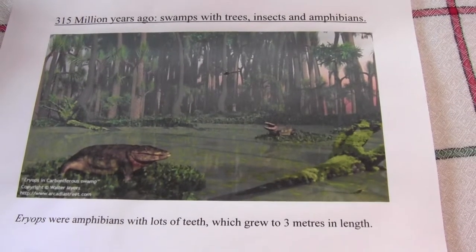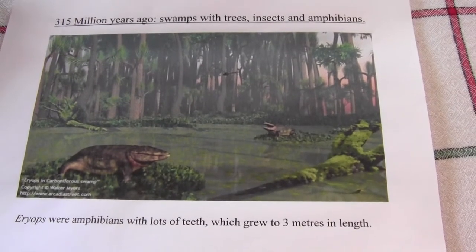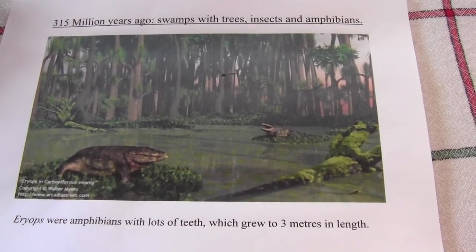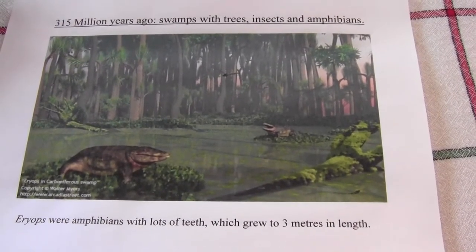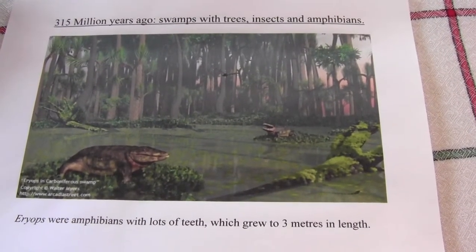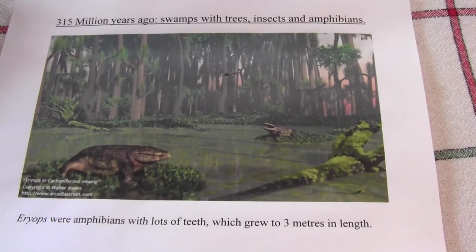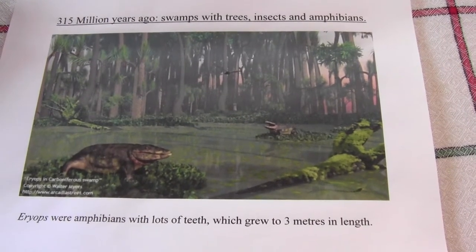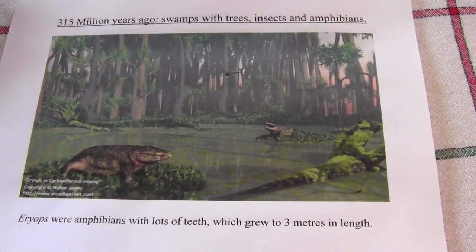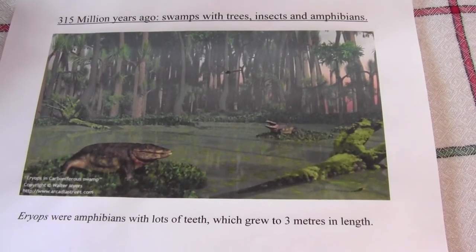The land then was mostly swampy and had forests formed from club mosses, mares' tails, ferns, and primitive ancestors of conifers.